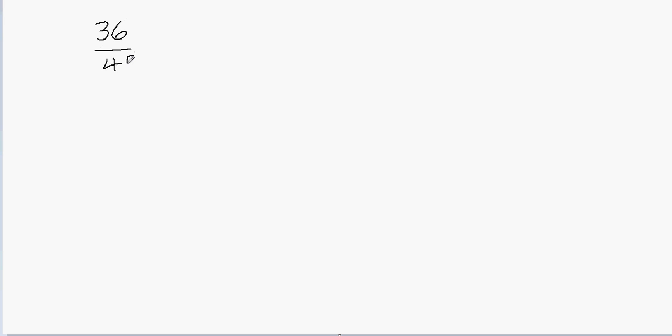36 over 45. To reduce this fraction to the lowest terms, we're going to use the GCF method. First of all, we're going to write down the factors of 36, and then we're going to write down the factors of 45.